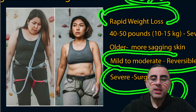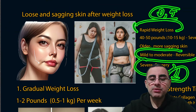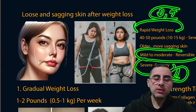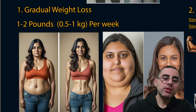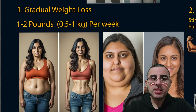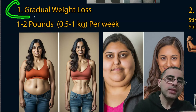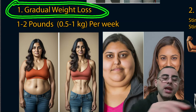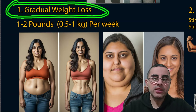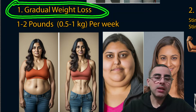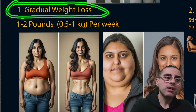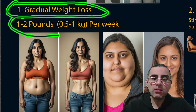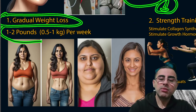Now let's talk about the treatment of sagging skin and what we can do to minimize it. The first and most important thing is gradual weight loss. Gradual weight loss helps prevent the development of sagging skin, giving our skin time to adapt. One to two pounds per week is optimal.